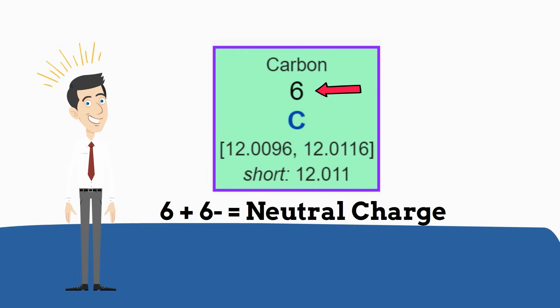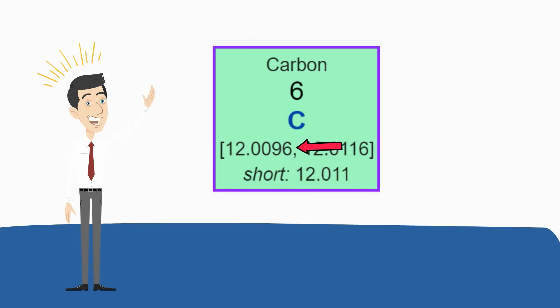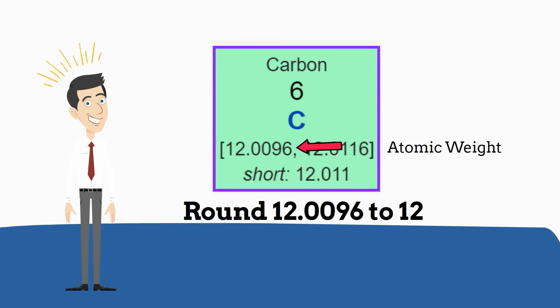Next are the number of neutrons. You will notice under the C is a number 12.0096. That is the atomic weight. It is the weighted average of the number of isotopes. But you need the mass number for the number of neutrons, so you will round it to its nearest whole number. In this case, 12.